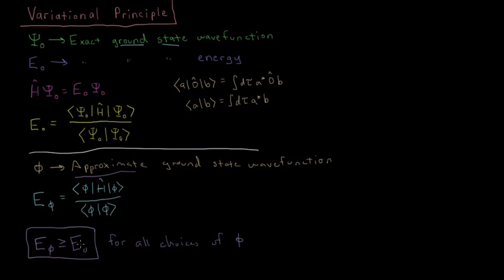We can use this to determine the quality of an approximate wave function by how well it approaches the true ground state energy. If we have a system where we make our wave function depend on some variational parameters — for example, some wave function E(phi) which depends on some parameter lambda — we know that that energy is always going to be greater than or equal to E-naught, the true energy.